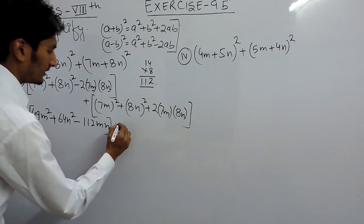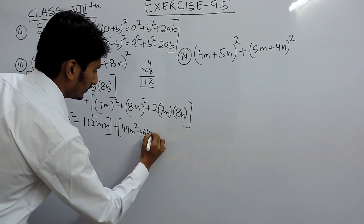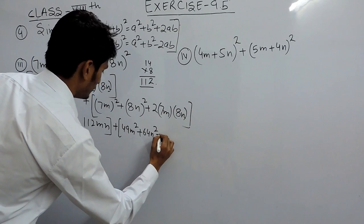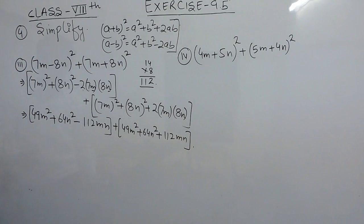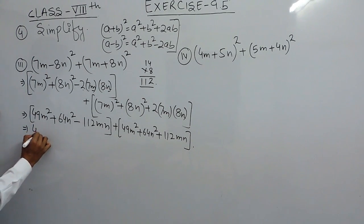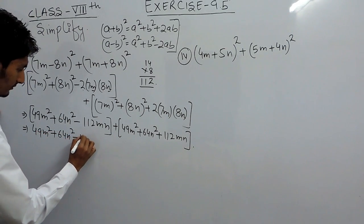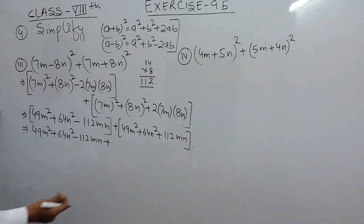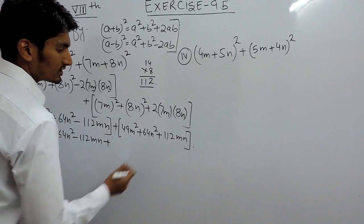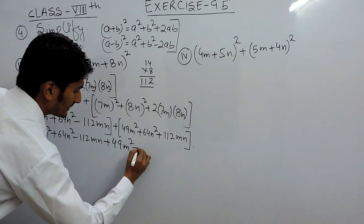So the first expression gives 49m² + 64n² - 112mn. The second expression (7m + 8n)² gives 49m² + 64n² + 112mn. Since the second bracket has a positive sign, there is no change in the signs inside, so the expression remains as it is.